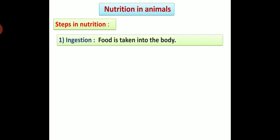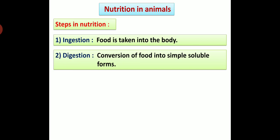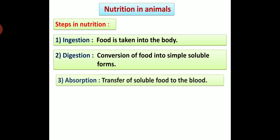Now we are going to see different steps in nutrition. First step: Ingestion - in this step, food is taken into the body. Second: Digestion - food is converted into simple soluble forms. Third: Absorption - in this step, there is transfer of soluble food to the blood; it means soluble food is absorbed into the blood.